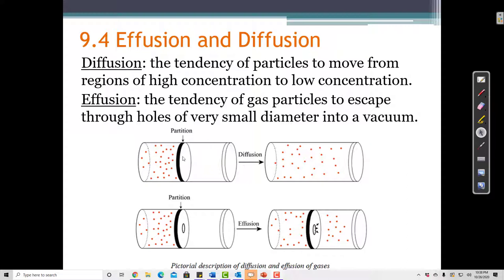So diffusion is when I have lots of gas particles on one side of a partition and a vacuum on the other. A vacuum just means that there are no gas particles. When I remove the partition, these particles will slowly move from the side where there are a lot of them to the side where there are not very many.